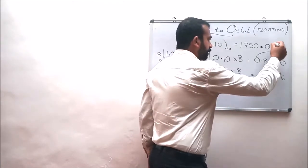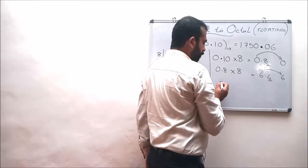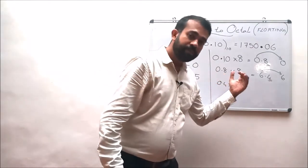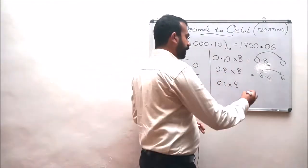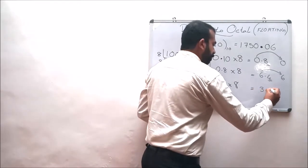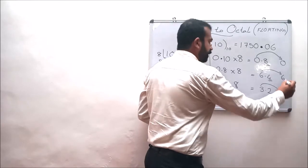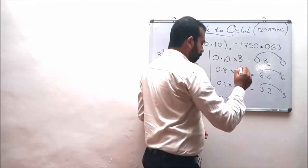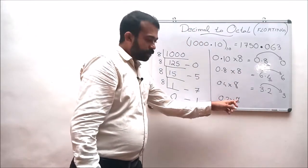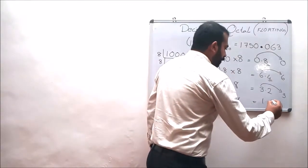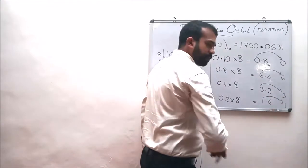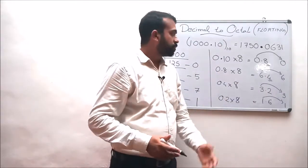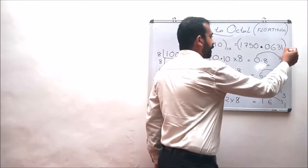The remaining 0.4 is multiplied with the base value. 0.4 into 8 gives 3.2, so 3 is taken to the result. Then 0.2 is multiplied with the radix value, giving 1.6, so 1 is taken and the rest continues. This step can continue numerous times. I am stopping the result at 4 fractional points.